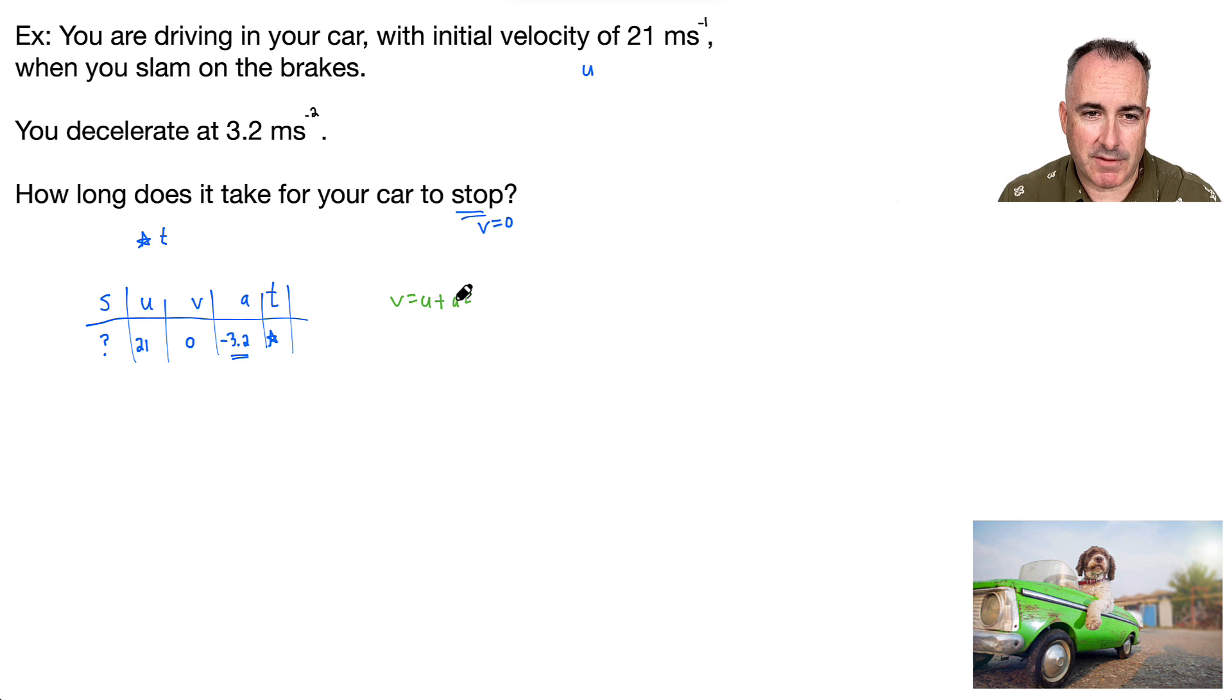So let's deal with it. What am I finding? I'm finding T. And remember, I know that V is zero. So that's a zero. If I want T by itself, it's going to be minus U divided by A. So T is minus U over A. That means T will be minus 21 divided by negative 3.2. And thank goodness, a negative divided by negative will give you a positive. Hooray! Time will be positive. That's good. It needs to be.